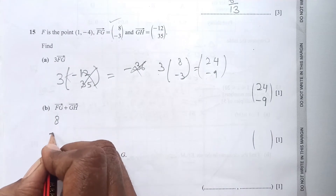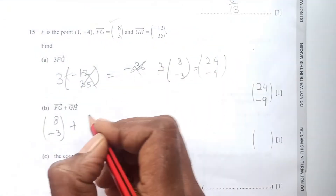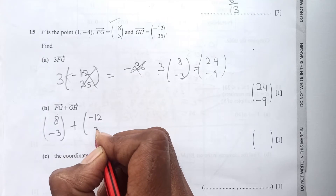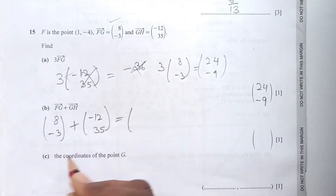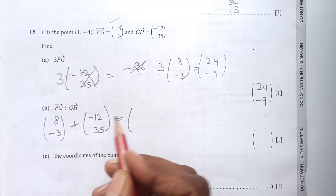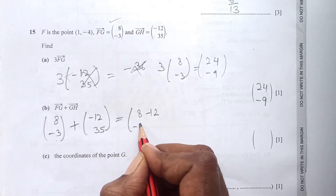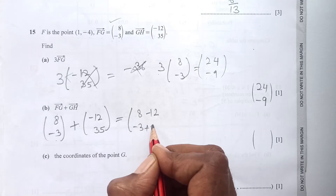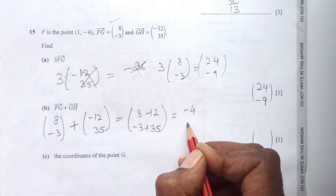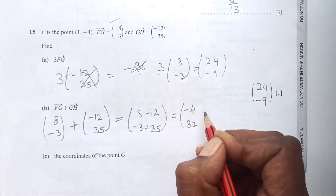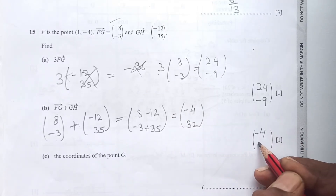FG is (8, -3) and GH is (-12, 35). Adding them: 8 + (-12) = -4, and -3 + 35 = 32. So the final answer is (-4, 32).